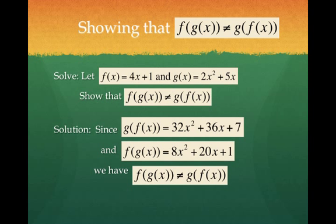Clearly 32x squared plus 36x plus 7 does not equal 8x squared plus 20x plus 1, and so here's a simple example of where we can see composing either way doesn't necessarily mean we get the same functions. It's going to be a very special case when we do get the same function, and that's going to be inverses.